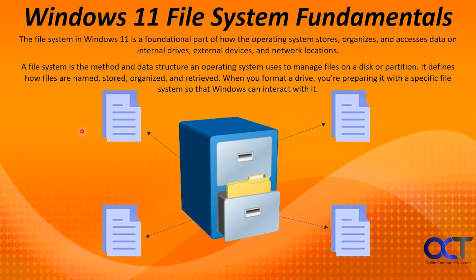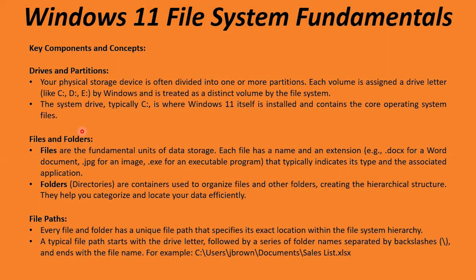So let's continue our discussion on file system fundamentals with some key components and concepts. Drives and partitions: your physical storage can be divided into one or more partitions or volumes — you can use those terms interchangeably. Each volume is assigned a drive letter like C, D, or E by Windows and is treated as a distinct volume by the file system. The system drive, also known as the Windows drive, is typically the C drive and contains the operating system.